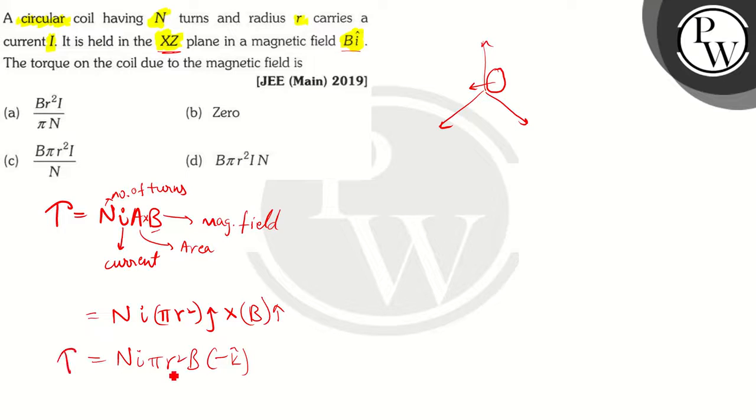The magnitude of torque is going to be equal to, implies mod of the torque is going to be equal to mod N I pi R square B.